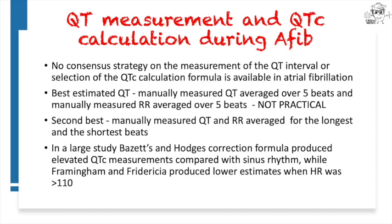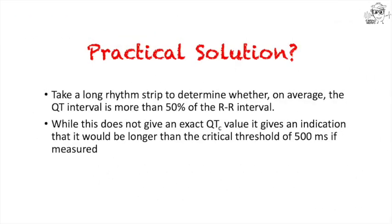Bazett and Hodges correction formulas overestimate QTc in atrial fibrillation, while Framingham and Fridericia underestimate it. One practical solution is to look at the rhythm strip and check whether, on average, the QT interval is more than half the RR interval. This doesn't give us the exact QTc number, but it signals that the QTc could be longer than the critical threshold of 500 milliseconds, prompting us to take action.